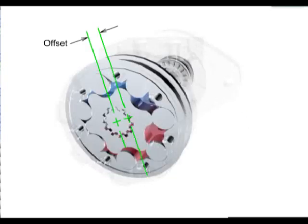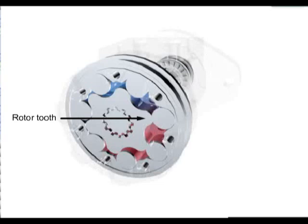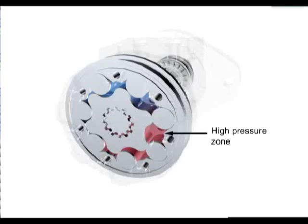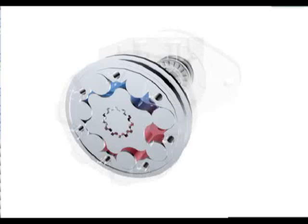The rotor sits offset in the cavity of the stator. An open cavity between the rotor and the stator is created by the offset of the rotor, which has one less tooth than the stator. One tooth of the rotor is always opposed to one roller tooth of the stator. The cavity is divided into two pressure zones by the opposing teeth. One side of the opposing teeth is high pressure, and the other side is low pressure. The rotary valve ports fluid from the inlet to the high pressure cavity between the gears.